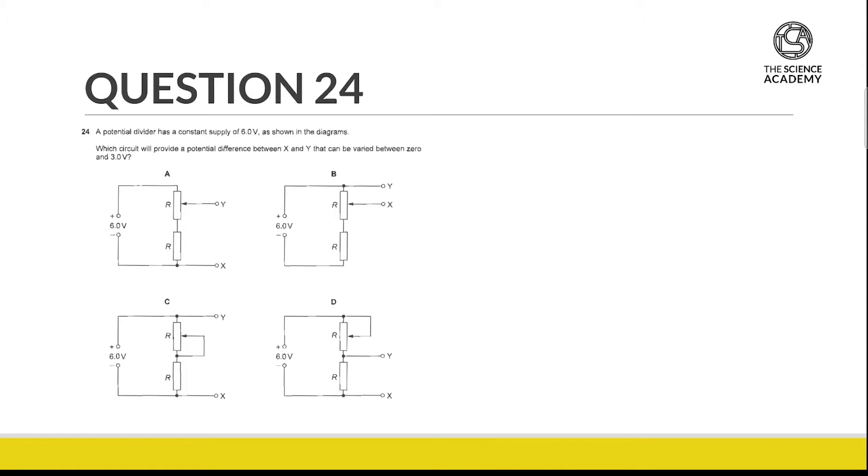For question 24, we are told that we have a potential divider that has a constant supply of 6 volts as shown in the diagrams. We are asked which circuit will provide a potential difference between X and Y that can be varied between 0 and 3 volts.